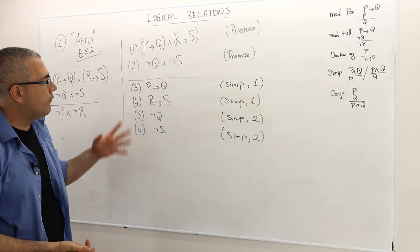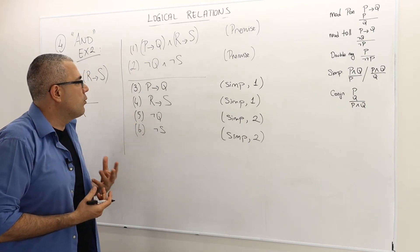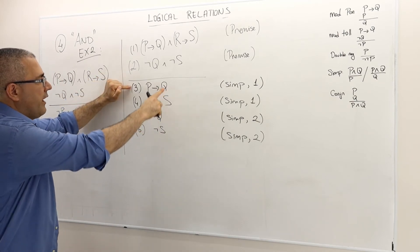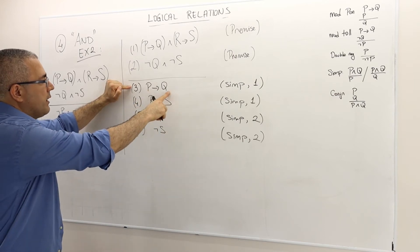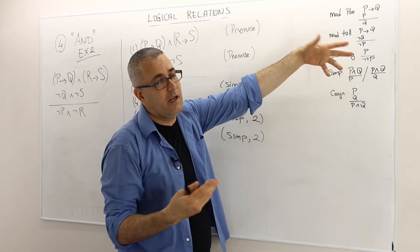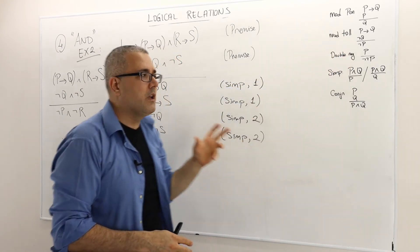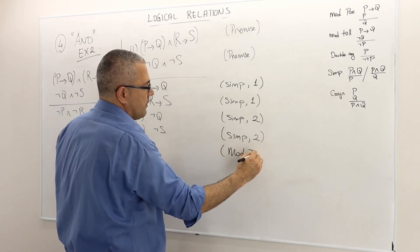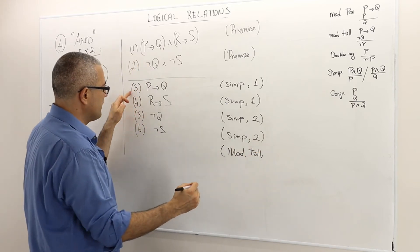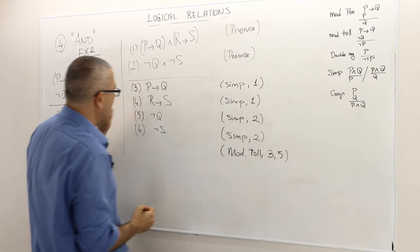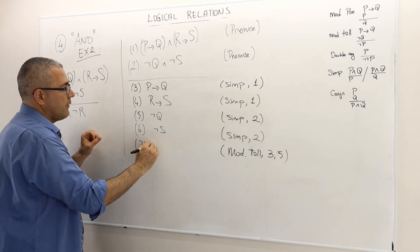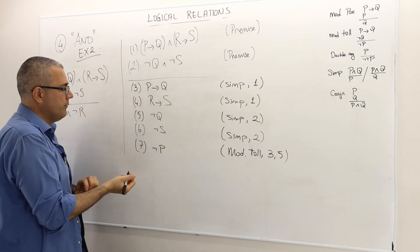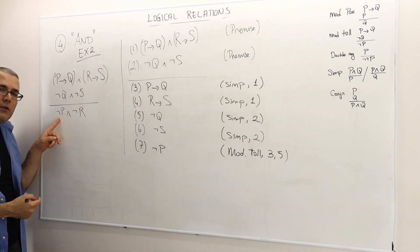So I have now four additional premises. Look at line 5 and line 3 — they both have Q. P implies Q and not Q — that's exactly modus tollens. So thanks to modus tollens of arguments in lines 3 and 5, P implies Q is true and not Q is true, therefore not P must be true. So I basically proved the first part of the conclusion.